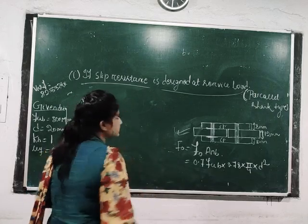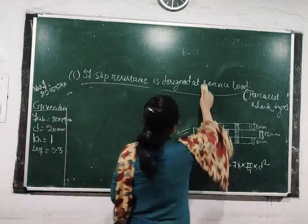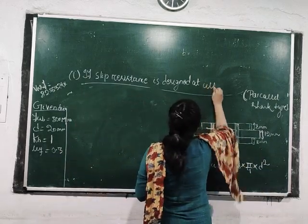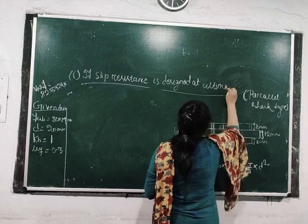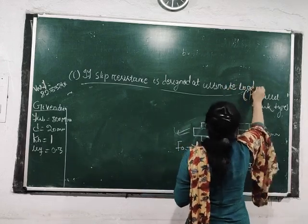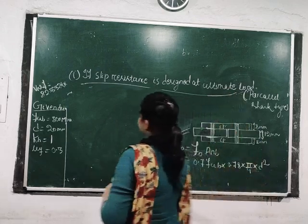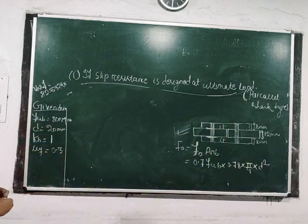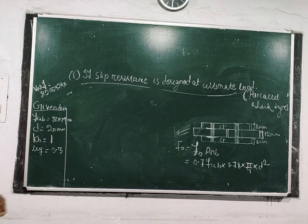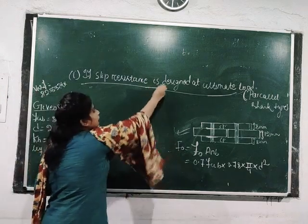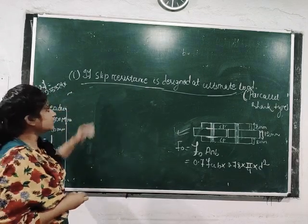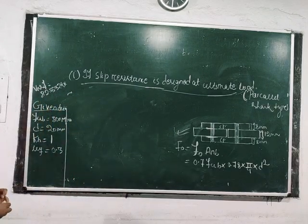The next condition is when the slip resistance is designed at ultimate load. For this condition, the nominal shear capacity of the HSFG bolt remains the same, but the value of γmf is different — for this condition γmf = 1.25.